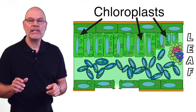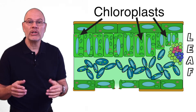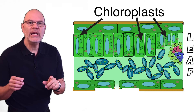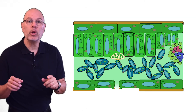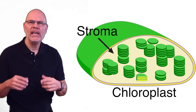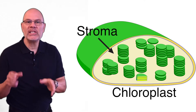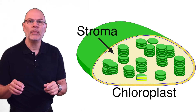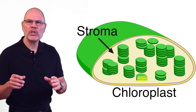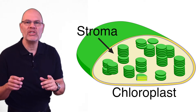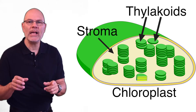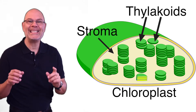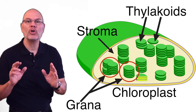Photosynthesis occurs in plant cells in organelles called chloroplasts. The inner fluid of the chloroplast is called the stroma. It's equivalent to the cytosol of a eukaryotic cell. The stroma surrounds these little membrane-bound sacs called thylakoids, which are organized into stacks called grana.